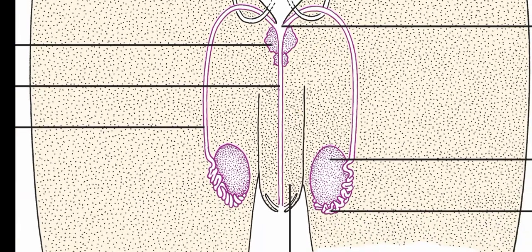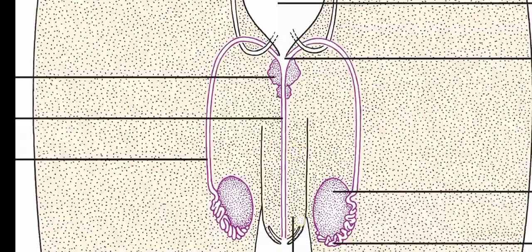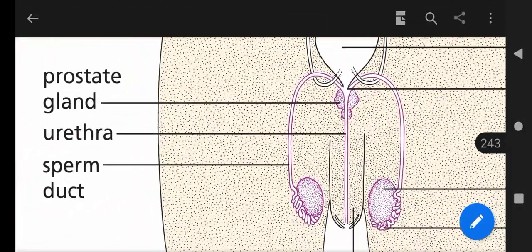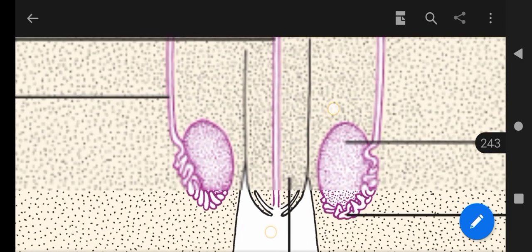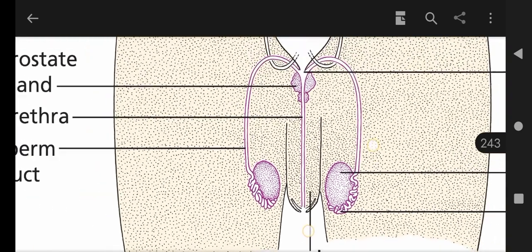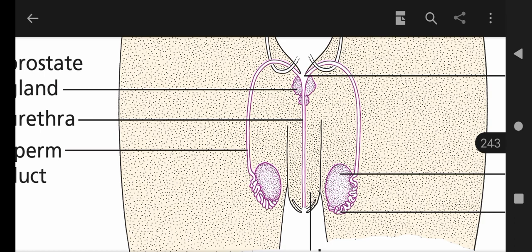After the glands, the sperm goes into the urethra, which is a tube within the penis. The penis has a skin covering, muscles with the ability to erect, many blood spaces, and connective tissue. This was the basic overview of the anatomy.